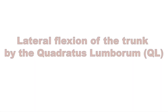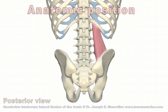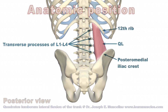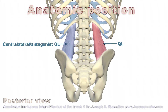Lateral flexion of the trunk by the quadratus lumborum. We see a posterior view of the trunk and pelvis in anatomic position, and we see the right-sided QL. Now we see the contralateral left-sided QL.